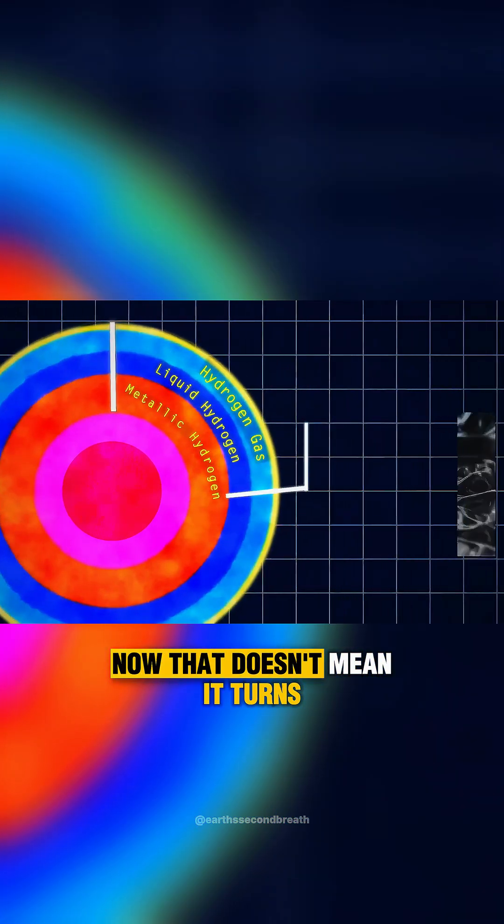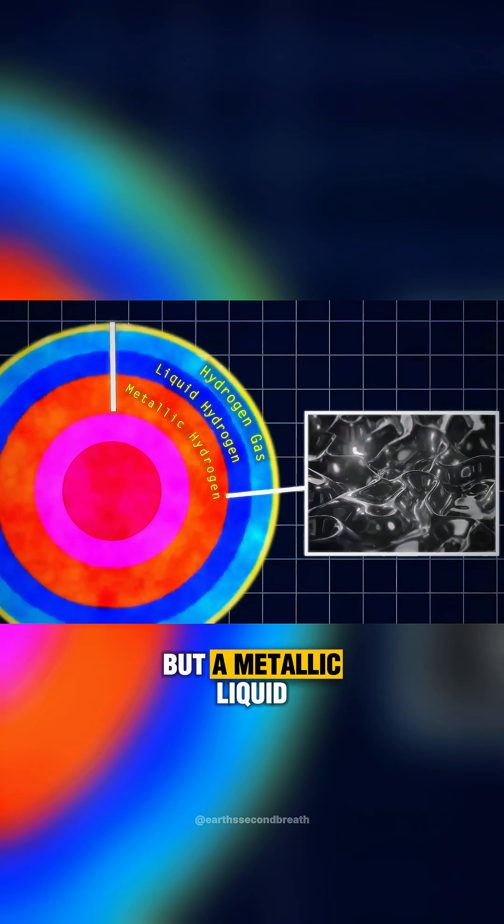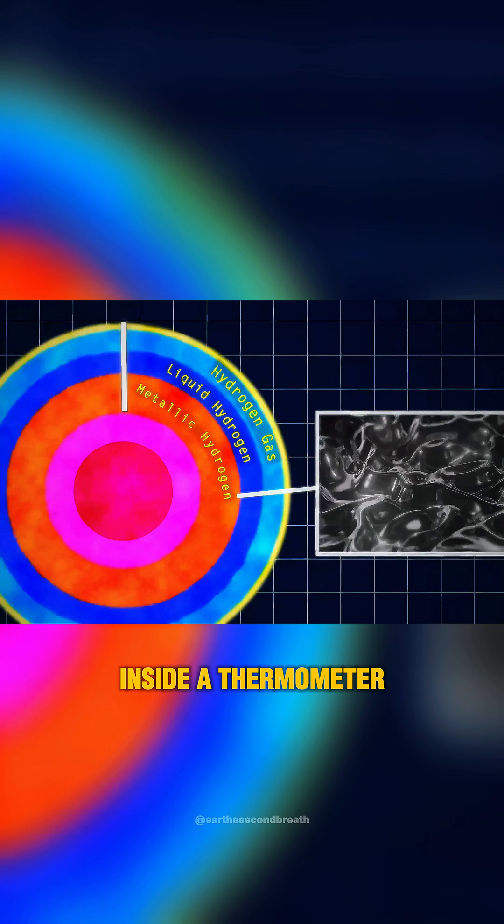hydrogen changes state into something called metallic hydrogen. Now that doesn't mean it turns solid like steel, it's still liquid, but a metallic liquid, maybe something like the mercury inside a thermometer.